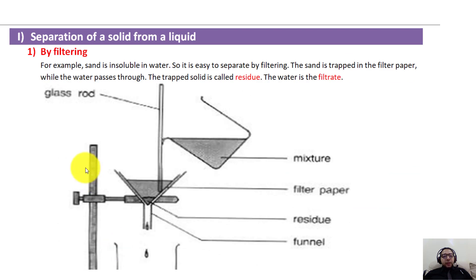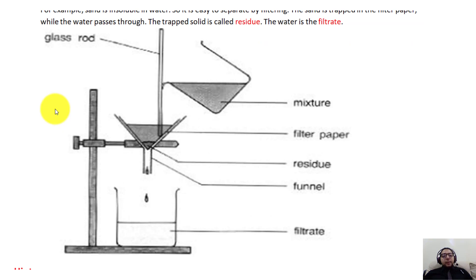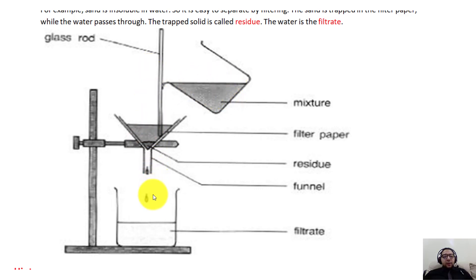Let's discuss the first method: separating a solid from a liquid using filtration. To set up the apparatus, we have a stand with a holder to hold the funnel. Inside the funnel we place a filter paper. We also have the mixture, a glass rod, and a beaker. After placing the filter paper, we pour the mixture through it. The filter paper contains tiny holes that are very, very small.